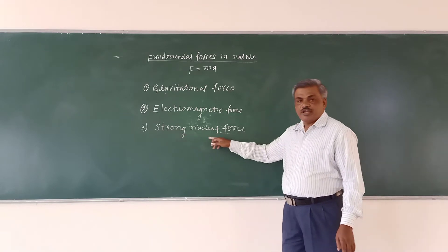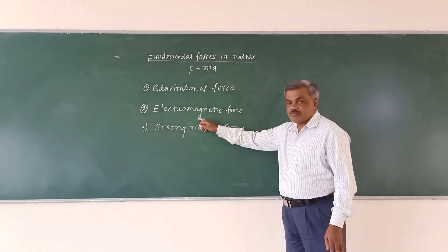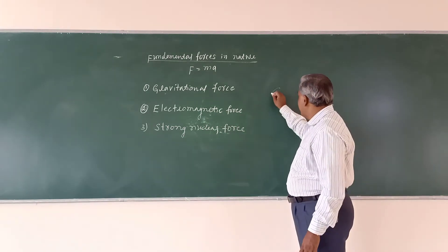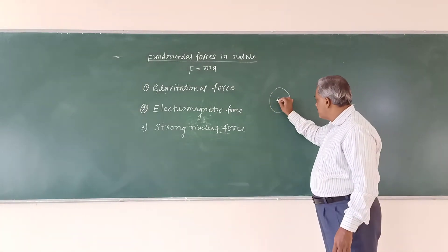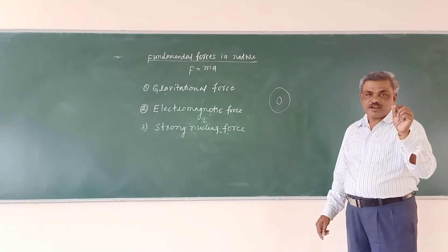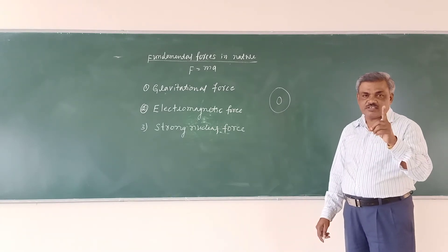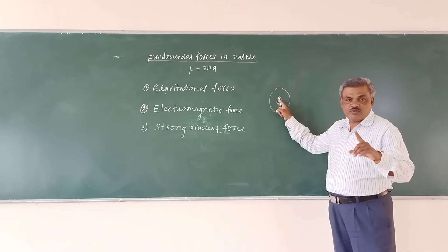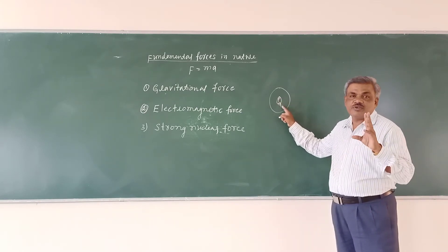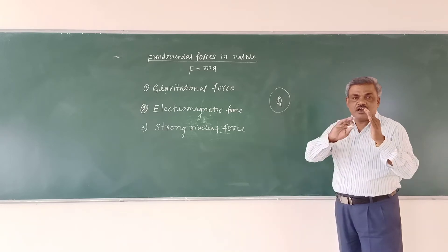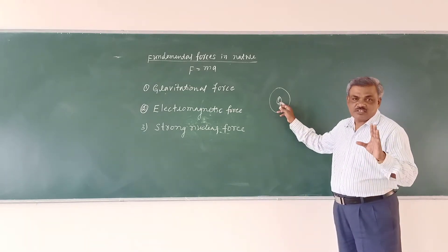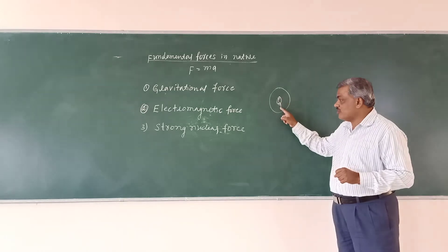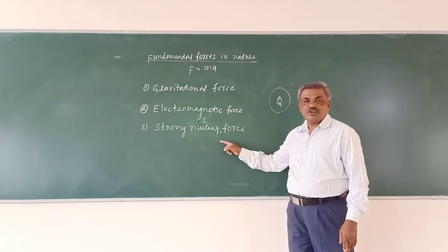Third one: strong nuclear force. So first is gravitational force, second is electromagnetic force, third is strong nuclear force. This is the atom. The central part of the atom is called the nucleus. The nucleus consists of two fundamental particles — proton and neutron. Proton is a positively charged particle, neutron is neutral. Protons and neutrons are collectively called nucleons.